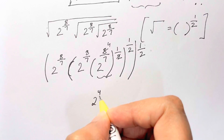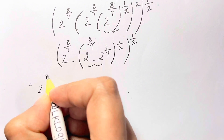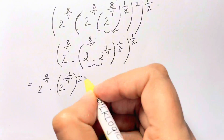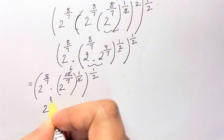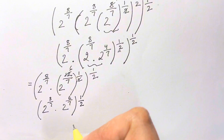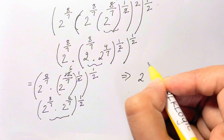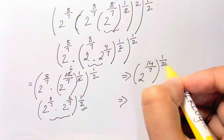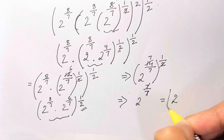Now let's work through this part. Same base, we add the powers: 8 plus 4 is 12, giving 2^(12/7), whole to the power of 1/2. Cancelling: 2 times 6 is 12, so we get 2^(6/7), and then 8 plus 6 is 14. Multiplication with the same base — add the powers: 14 over 7, whole to the power of 1/2. Then 2 times 7 is 14, giving 7 over 7. So 2 to the power of 7/7 is 2 to the power of 1, which equals 2. That's the answer.